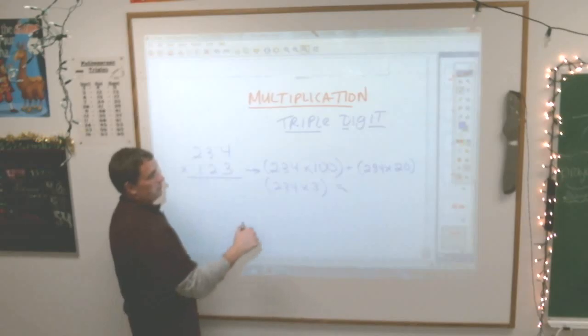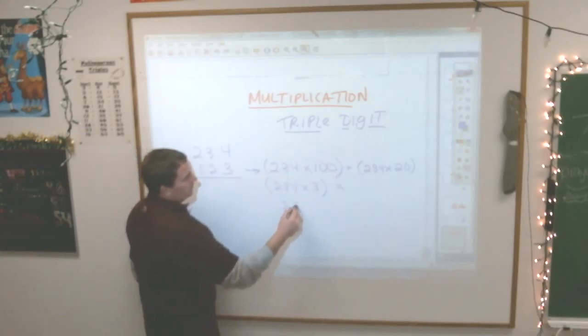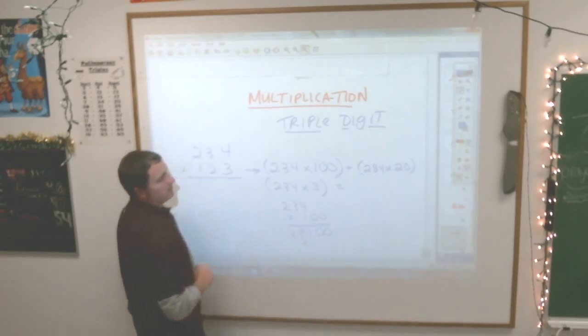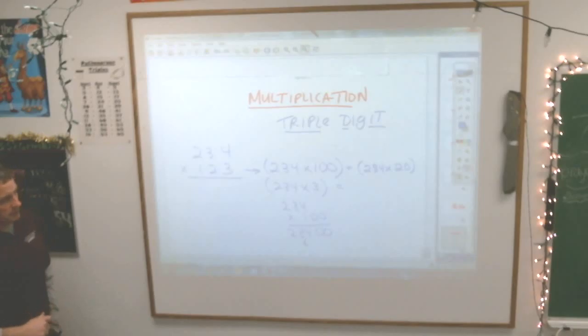Well, let's do it just to make sure we're doing it right here. What is 234 times 100? Just got done talking about that. I get, drop down the zeros, 234. I get 23,400. Yeehaw for the big numbers.